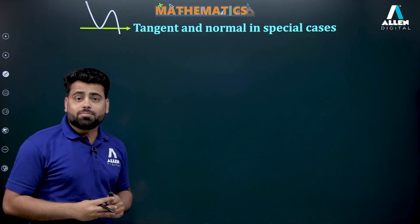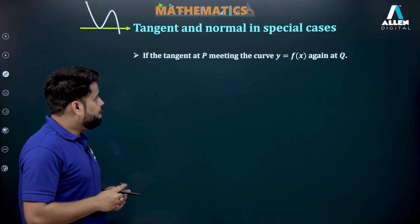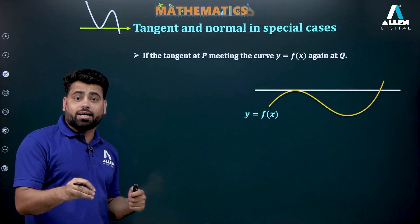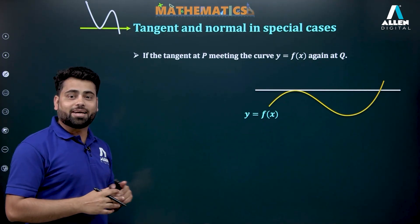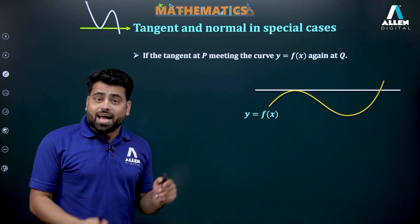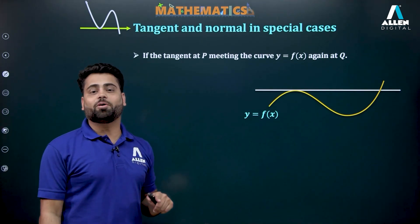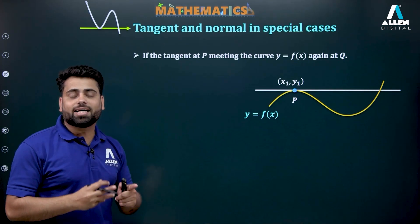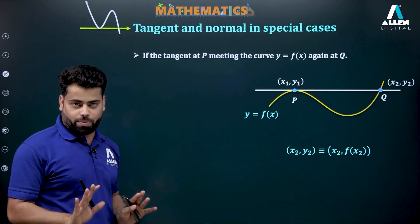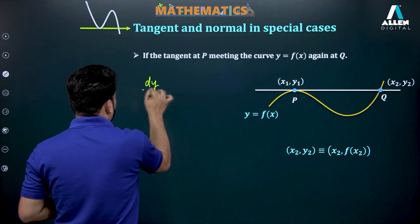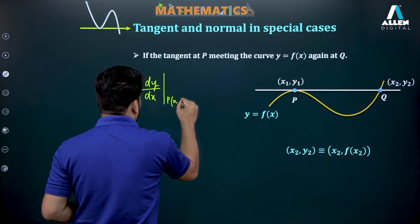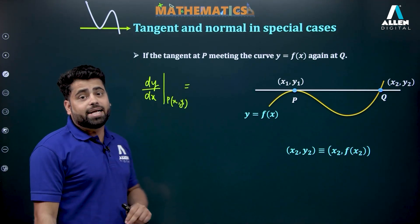Special Case 1: if the tangent at P meets the curve y = f(x) again at Q. You must be wondering what this situation is. We have a curve, and at point P the tangent is drawn, and that particular tangent is again meeting the curve at another point Q. I define the first point as (x₁, y₁) and the other point as (x₂, y₂). The concept is simple — I will find the slope of this line using dy/dx at point P, which is (x₁, y₁).